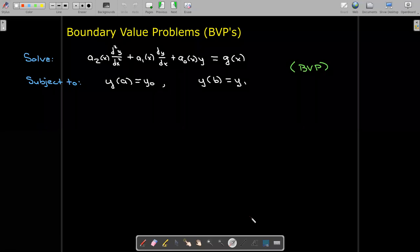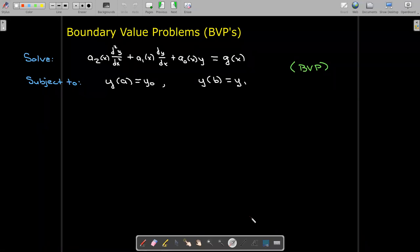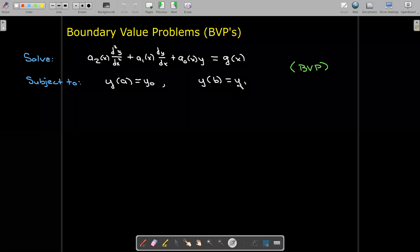Now let's look at some boundary value problems. So in a boundary value problem, we have a second order differential equation and it's going to be linear. And we're going to have two boundary conditions. So in this case we're told that when x equals a, y will equal y_0, and when x equals b, y equals y_1.